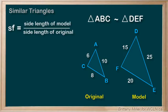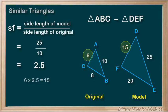We can plug in the side lengths into the scale factor formula and we get a scale factor of 2.5. So, each side in triangle DEF is 2.5 times the length of its corresponding side in triangle ABC.